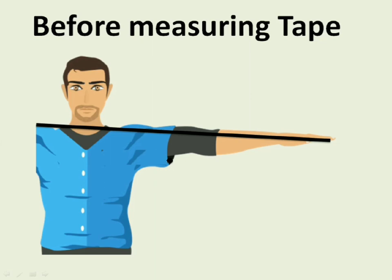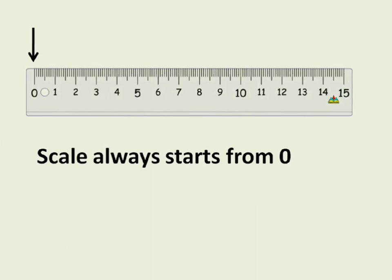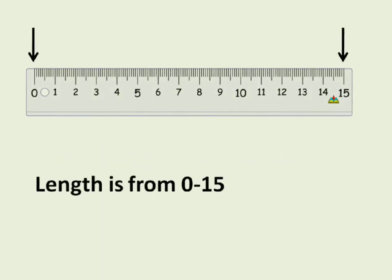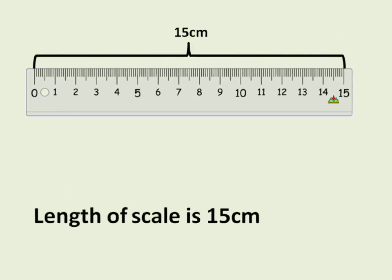On screen you can see the scale. Every one of us have this in our geometry box. It always starts from zero and its length is fifteen. The unit for this is centimeter. So let's understand the scale first. This small portion is half centimeter. Zero to one is equal to one centimeter. Three to five is two centimeter, and so on. The length of the scale is fifteen centimeter. We use this for measuring small things.